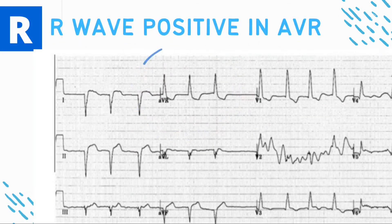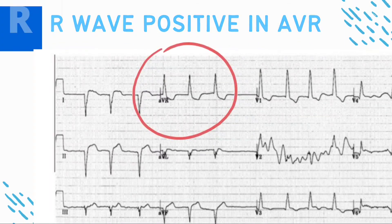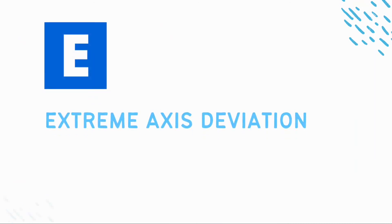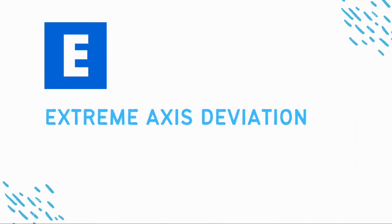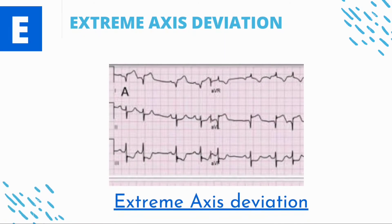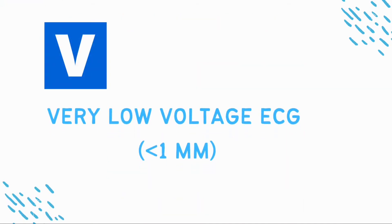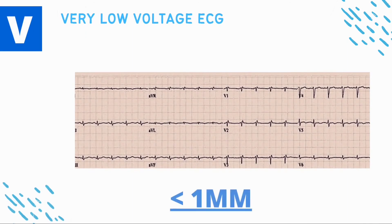E — Extreme axis deviation: QRS axis is between 180 and -90 degrees, commonly seen in right arm and left arm lead misplacement. S — Suspect dextrocardia (covered later). D — Very low voltage: less than 1 millimeter, seen when an isolated limb lead such as right leg and left arm, or right leg and right arm leads are misplaced.